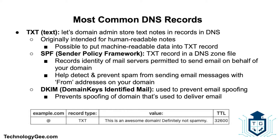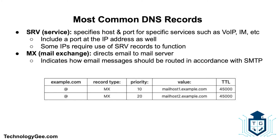Another type of TXT record is DKIM, or DomainKeys Identified Mail — an authentication standard used to prevent email spoofing by attempting to prevent the spoofing of a domain used to deliver email. Then we have the SRV, or service record, which specifies a host and port for specific services such as voice over IP and instant messaging. Unlike most DNS records that only specify a server or IP address, service records include a port as well, and some internet protocols require SRV records to function properly.